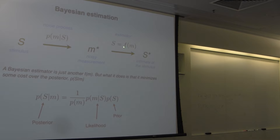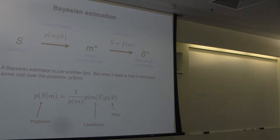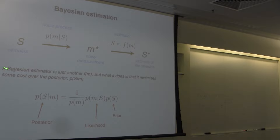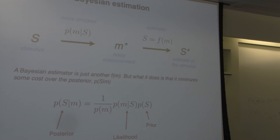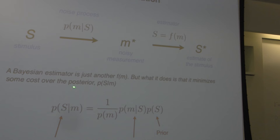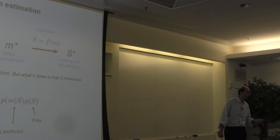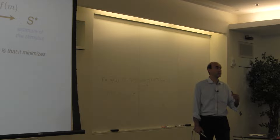Up to now you saw what maximum likelihood is — that's one of these f's. There is another f that corresponds to the Bayesian estimator; in fact there's a whole class of f's. A Bayesian estimator is just another f of M, but instead of finding the max of the likelihood, it's a little bit more elaborate. It allows you to minimize some cost over what is called the posterior. The posterior is exactly what you computed when we were talking about that medical test: you didn't take the 90% into account only, but you also took into account the extra information that only 2% of the population have the disease. That's the prior.